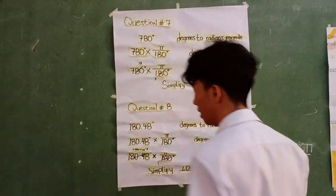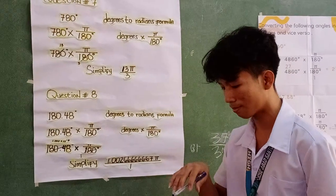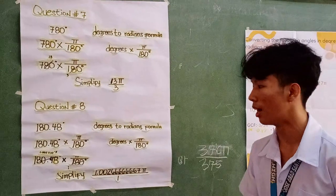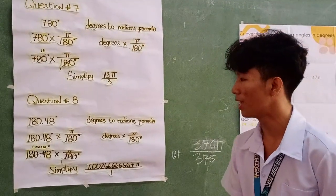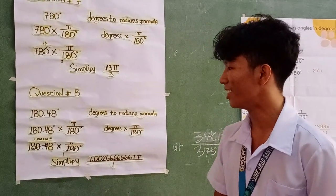Question number 8 is 180.48 degrees. Again, we use the degrees to radians formula: degrees times pi over 180. So 180.48 times pi over 180 degrees.